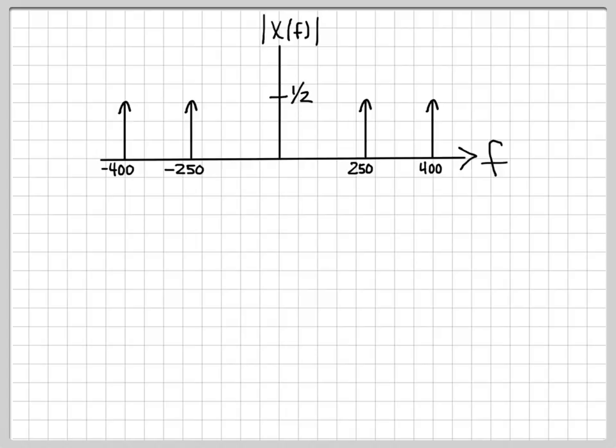On the previous screen, they had a magnitude of 1 over 2j. So the magnitude of 1 over 2j is just 1 over 2. So they also have a magnitude of a half.